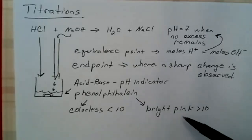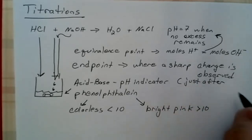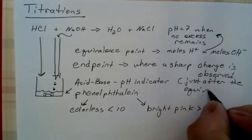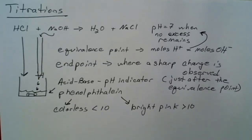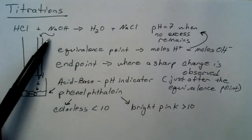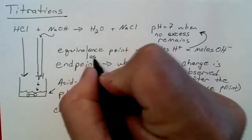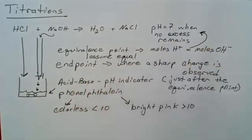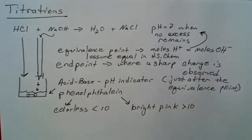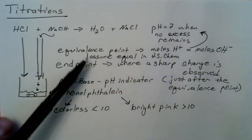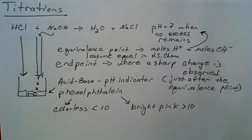This phenolphthalein, which changes bright pink, is going to change just after the equivalence point. Any question that you're given, any information that you're given about this titration, you're going to make the assumption that these two are equal. So we assume these are equal unless we're given other information. They are, in fact, usually so close together that assuming they're equal gives us an extremely small error in any calculations that we do with that volume.